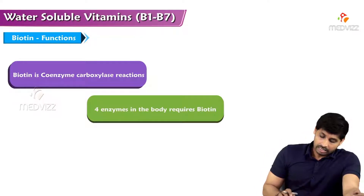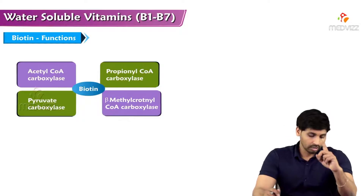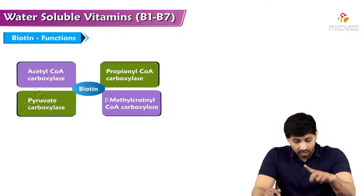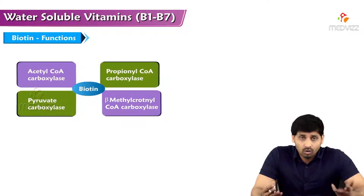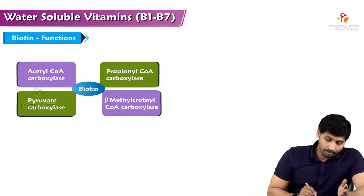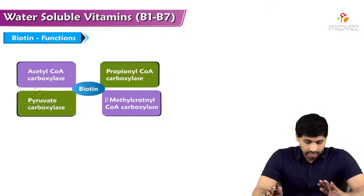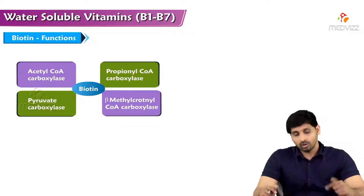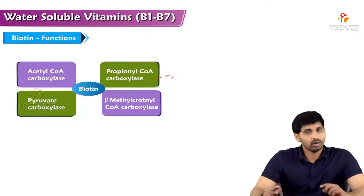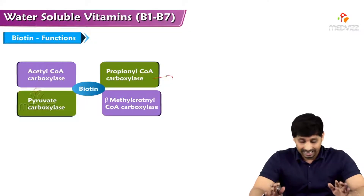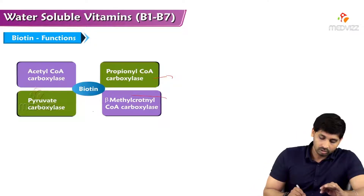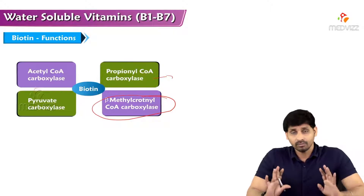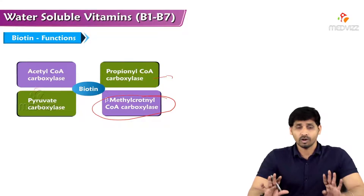Four enzymes in the body require biotin: acetyl-CoA carboxylase, propionyl-CoA carboxylase, pyruvate carboxylase, and beta-methylcrotonyl-CoA carboxylase. Acetyl-CoA carboxylase and pyruvate carboxylase are involved in gluconeogenesis — the conversion of pyruvate to oxaloacetate involves addition of carbon from CO2. Propionyl-CoA carboxylase is also involved in gluconeogenesis, acetyl-CoA carboxylase in fatty acid synthesis, and beta-methylcrotonyl-CoA carboxylase in branched-chain amino acid metabolism.